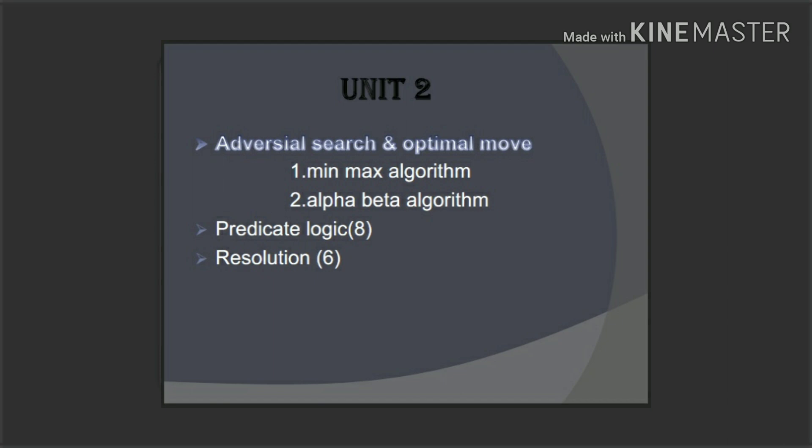How do you know this name? Optimal move search — no, adversarial move search. How do you know this? Min-max, alpha, beta. And predicate logic, resolution. Resolution is worth 6 marks. So let's see.